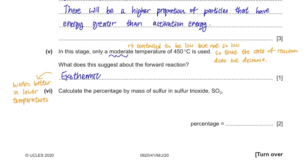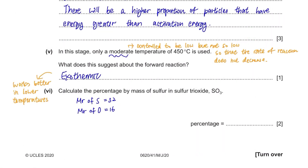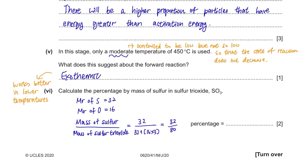Calculate the percentage by mass of sulfur in sulfur trioxide, SO₃. From the periodic table, the relative atomic mass of sulfur is 32 and for oxygen it's 16, giving SO₃ a relative molecular mass of 80. The percentage is 32/80 × 100 = 40%.